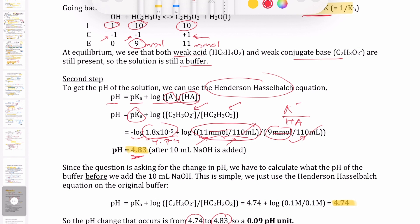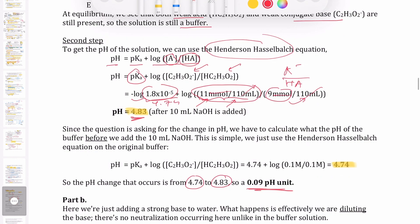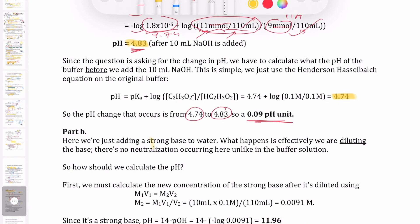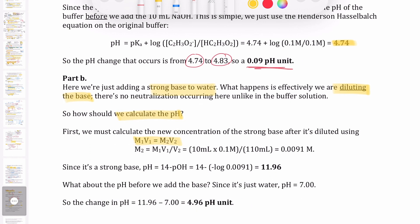Now let's see what happens if we take the same 10 mL of 0.1 M sodium hydroxide and add it to just pure water. When adding a strong base to water, you're effectively just diluting it — giving it a new, lower concentration. This is a dilution calculation: M₁V₁ = M₂V₂. The new OH⁻ concentration is (0.1 M × 10 mL) / 110 mL = 0.0091 M.